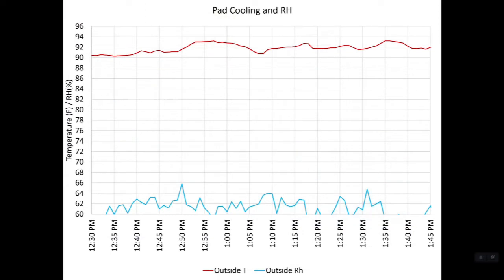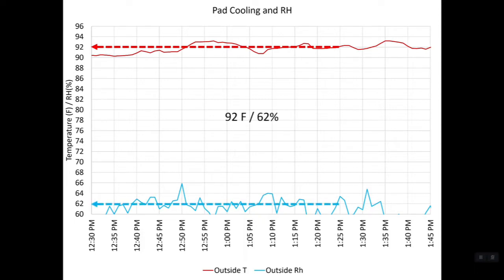This is the outside temperature and humidity last week on a farm where we are testing paper and plastic evaporative cooling pads. We are going to be showing some graphs today that have to do basically just with the paper pads. The outside temperature between 12:30 and 1:45 was around 92 degrees and the humidity was around 62 percent.